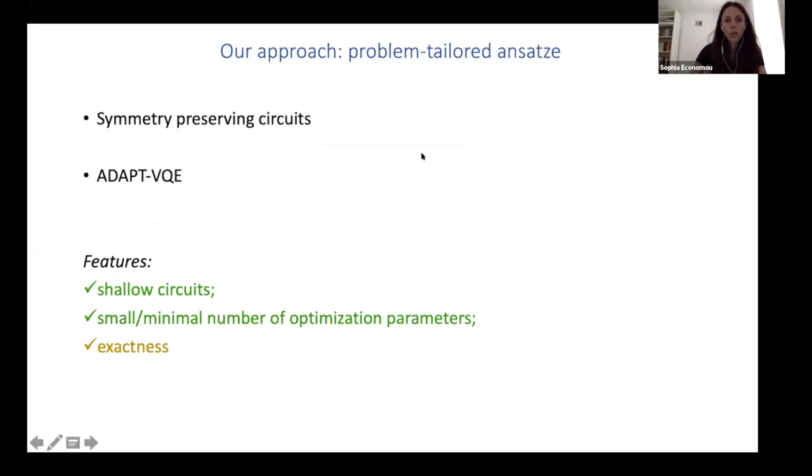So what I want to talk about today is tailoring the ansatz to the particular problem you're trying to solve. And we have two ways of doing this. One is to use circuits that preserve or in other words, built in some symmetry that you know your system has. The other approach is using an algorithm we have developed called ADAPT-VQE. And the features that we're after is to have as shallow circuits as possible to have either small or minimal number of optimization parameters and hopefully an exact ansatz.